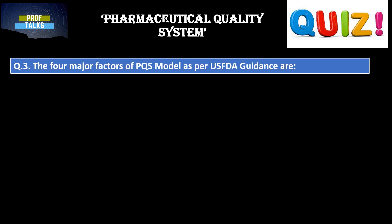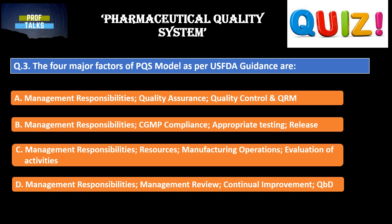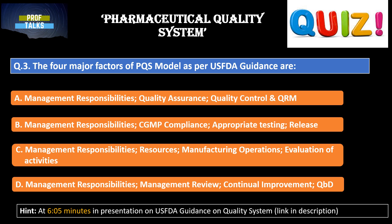The next question: the four major factors of the pharmaceutical quality system model as per USFDA guidance are — options are: management responsibilities, quality assurance, quality control, and quality risk management; management responsibilities, cGMP compliance, appropriate testing and release; management responsibilities, resources, manufacturing operations, and evaluation of activities; and management responsibilities, management review, continual improvement, and QbD. If you are unable to determine the answer, you can find it at around six minutes into the USFDA guidance presentation.